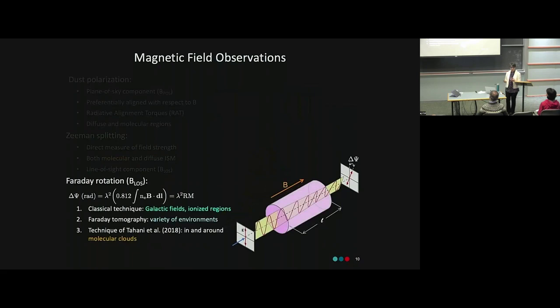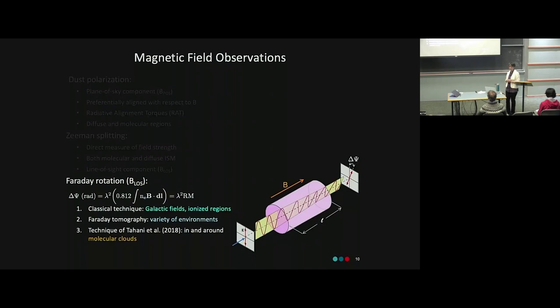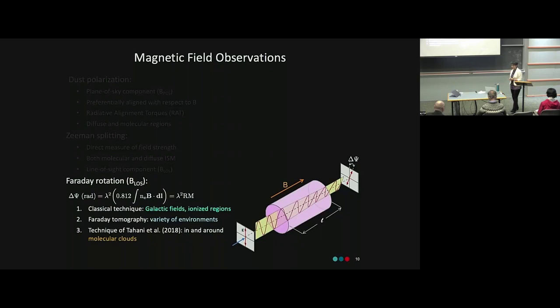Faraday rotation is another technique that provides the line-of-sight component of magnetic field. It is the rotation of a linearly polarized electromagnetic wave in a magneto-ionic medium. The amount of rotation is given by a formula where lambda is the wavelength, B is the magnetic field, dL is the path length, and n_e is the electron volume density. The quantity in parentheses is known as the rotation measure, or RM. There are three main techniques that use Faraday rotation to probe the line-of-sight magnetic field in different regions.